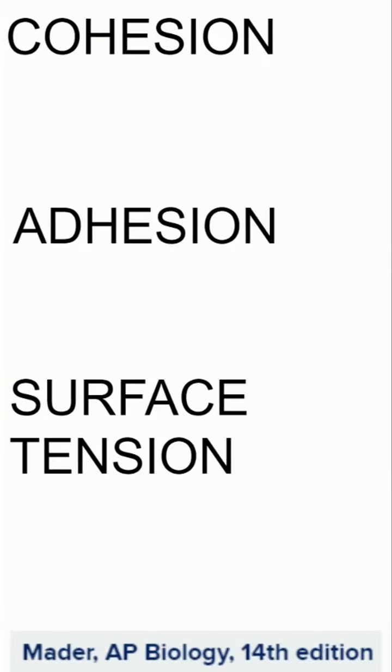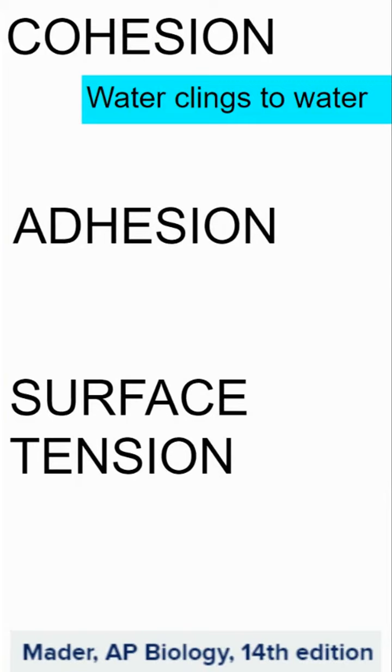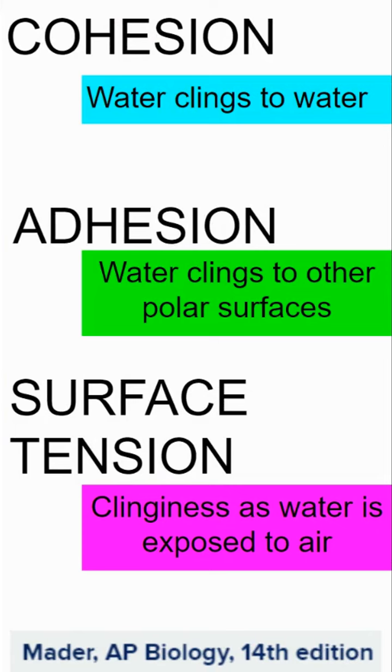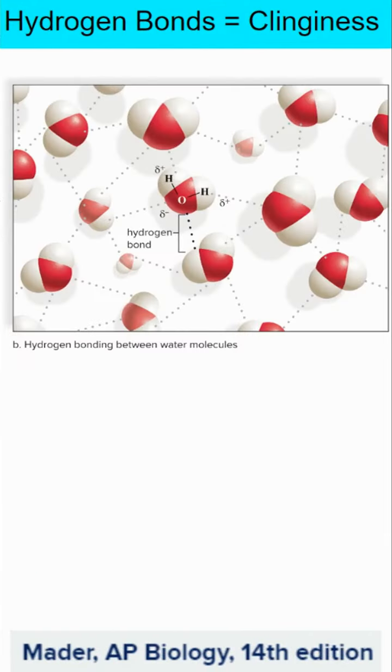Water is clingy. So we've got cohesion - water clings to water. Adhesion - water clings to other polar surfaces. And surface tension, which is that clinginess as it is exposed to air.